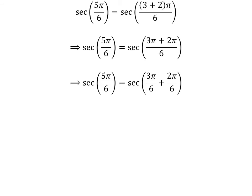The fraction 5 times pi upon 6 can be expressed as the sum of two fractions: 3 times pi upon 6 and 2 times pi upon 6. Cancelling out the common factor in the numerator and the denominator gives us secant of 5 times pi upon 6 is equal to secant of half of pi plus pi upon 3.